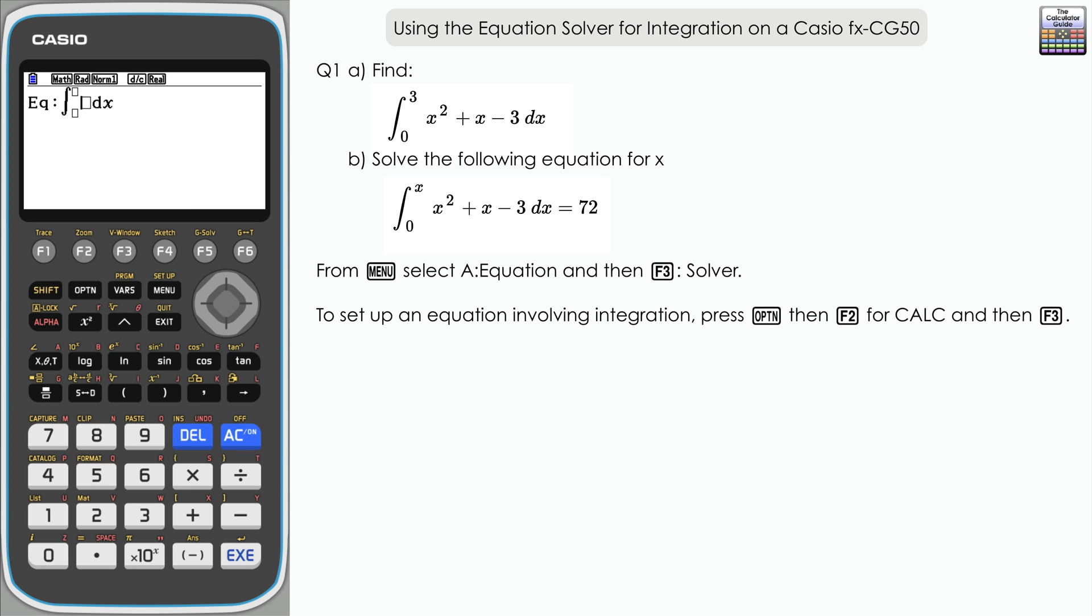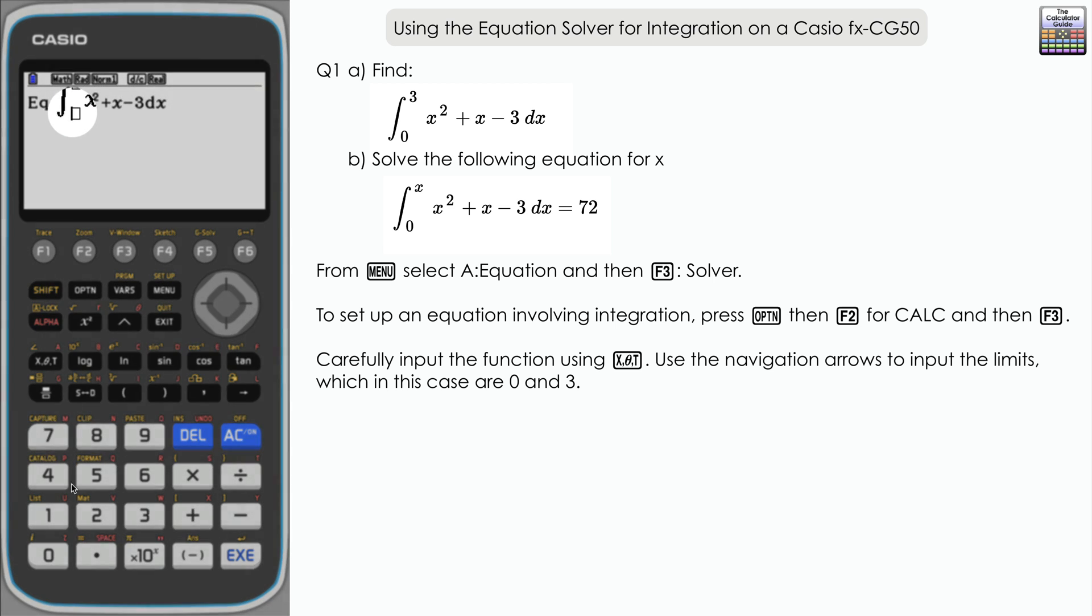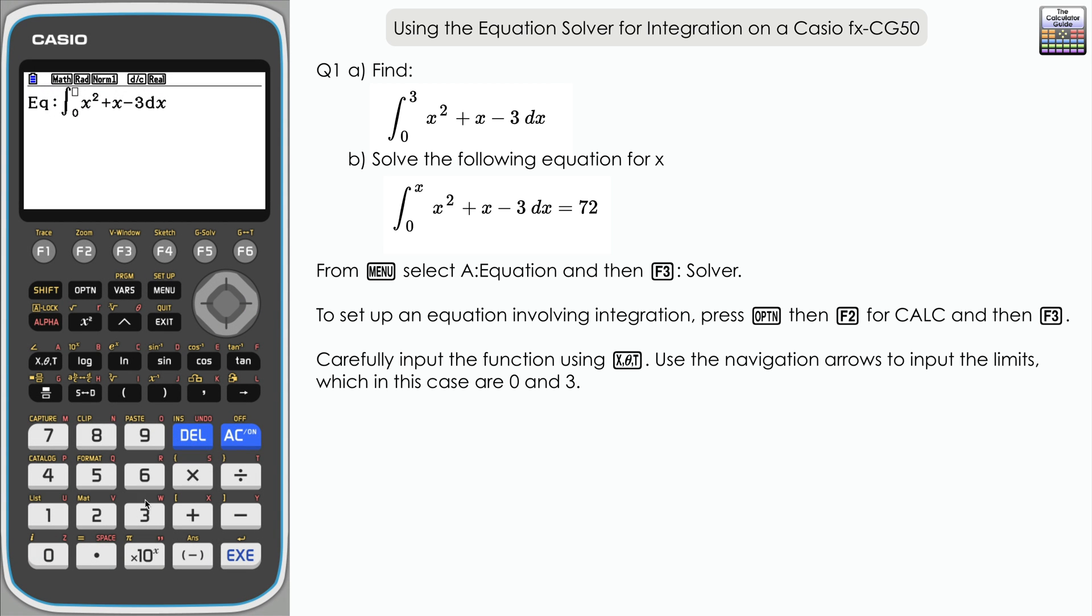The first thing we need to do is input our function, which is x squared plus x minus 3. Once we've inputted that, navigate right to the lower limit of your integration, which is zero, and then right again for the upper limit, which in this case is three. If we go right one more time, you can see that goes to the end of the function.